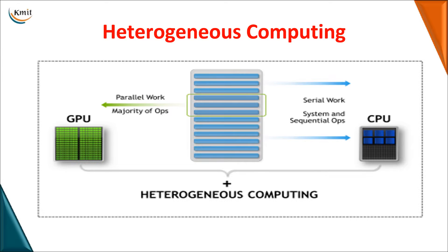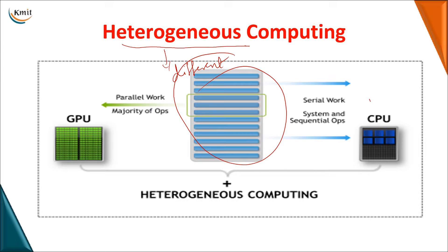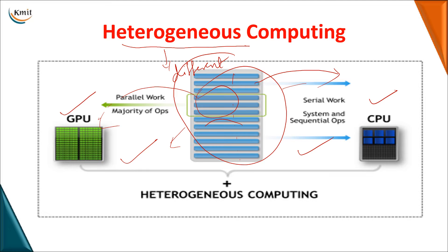When you go for high performance computing, one key parameter is heterogeneous computing. As the word implies, heterogeneous means different. In this approach, a system has a combination of a CPU and a GPU. If the code requires serial computation, the work is handled by the CPU, and if any part of the code is to be implemented in parallel, it is assigned to the GPU. So heterogeneous computing is a combination of serial and parallel processing.